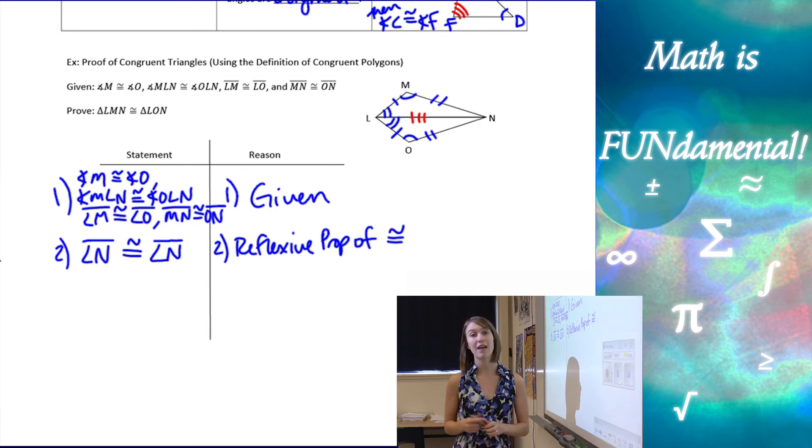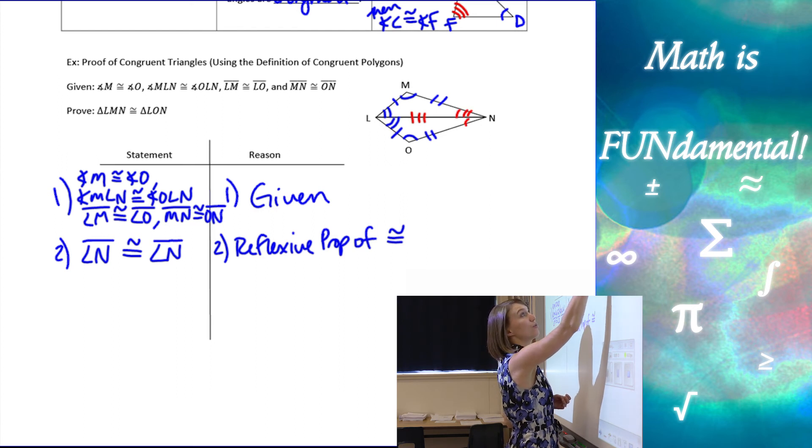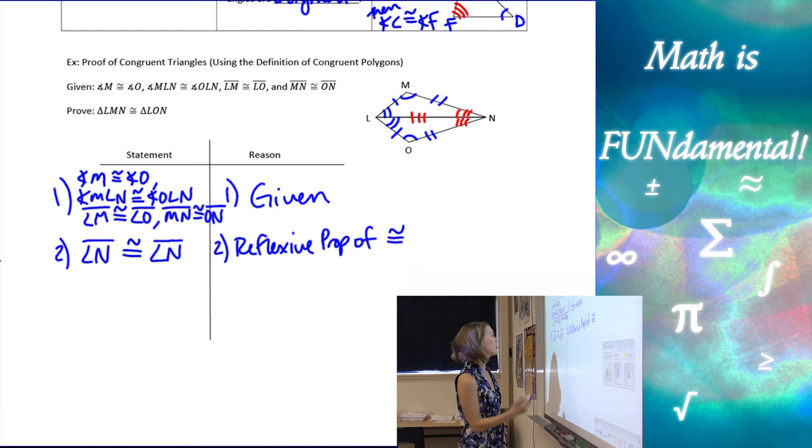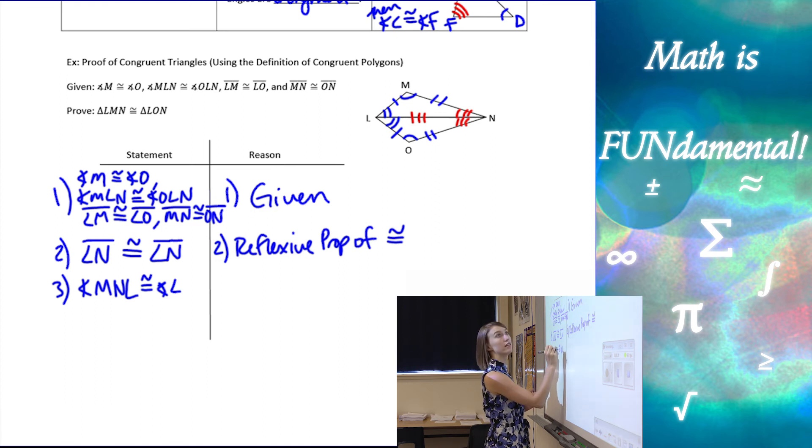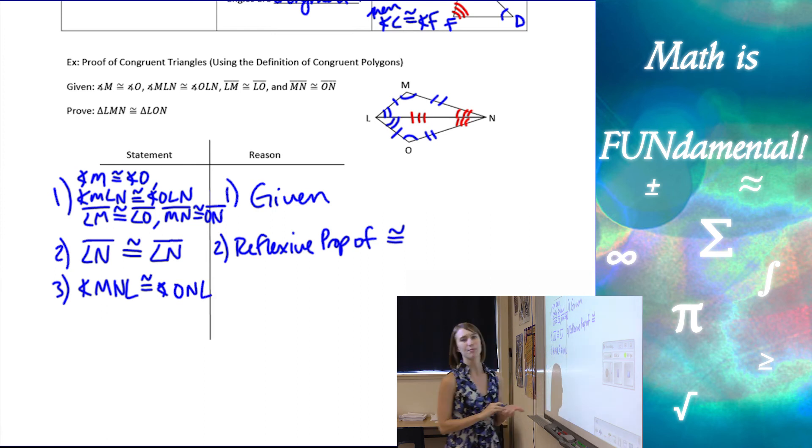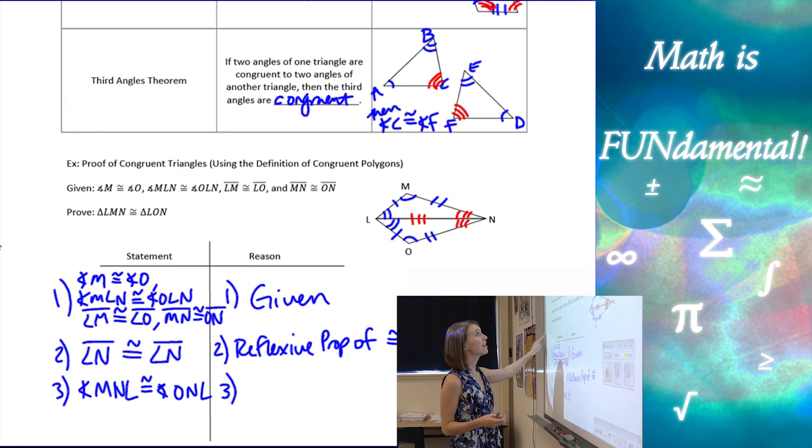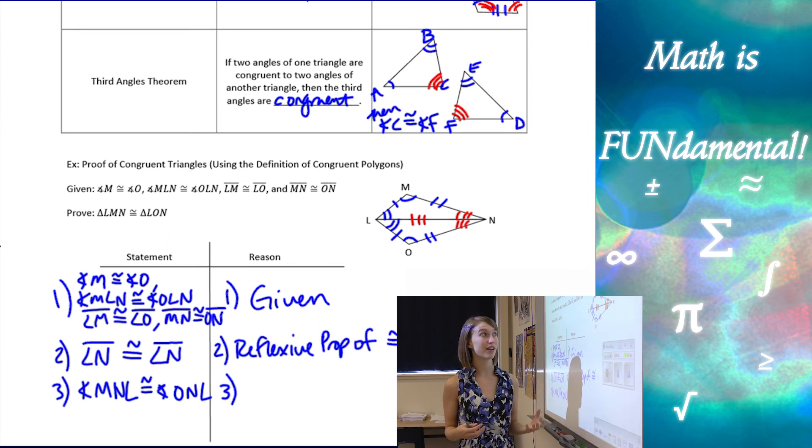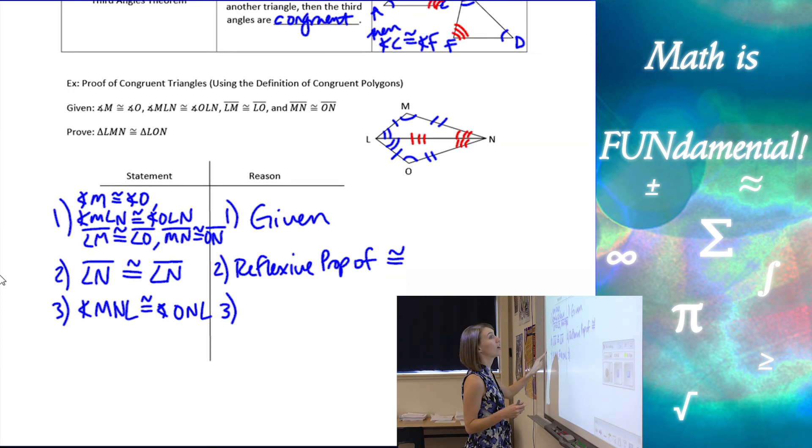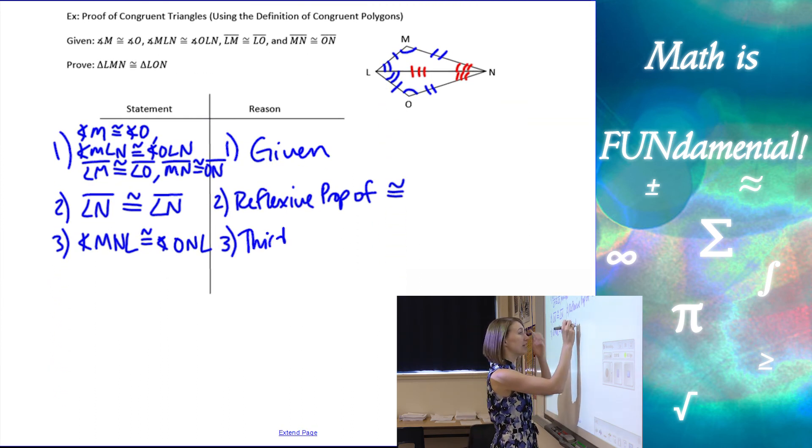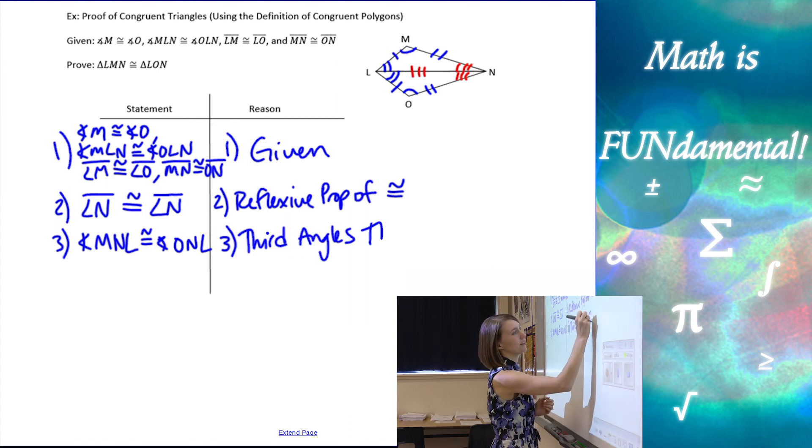Next, I need my third set of angles to be congruent, which are going to be these two angles in our diagram. We need to list those here, and that would be angle MNL congruent to angle ONL. Now why are those two angles congruent? That's what we need to be thinking each time. Well, we just learned that if two angles of one triangle are congruent to the two angles of another, the third angles have to automatically be congruent. We call that the third angles theorem. So that's going to be our reason in our proof.